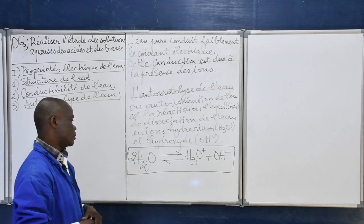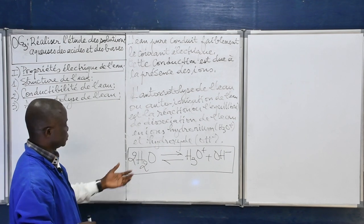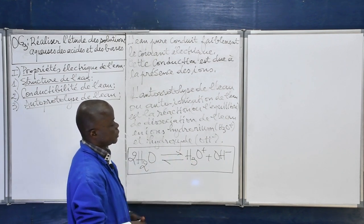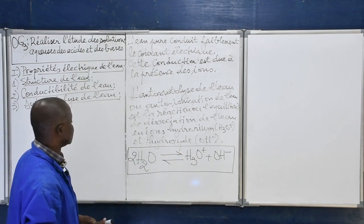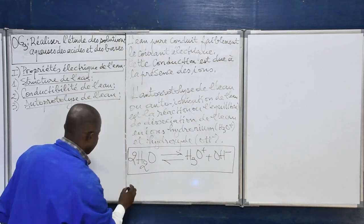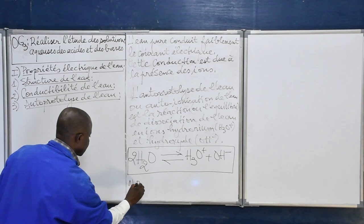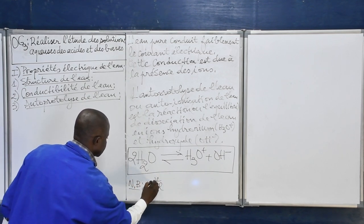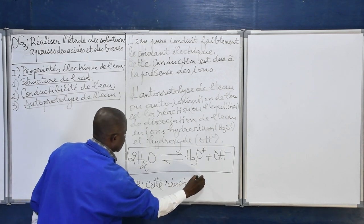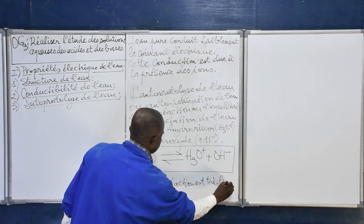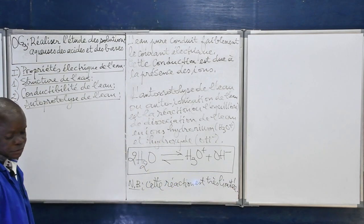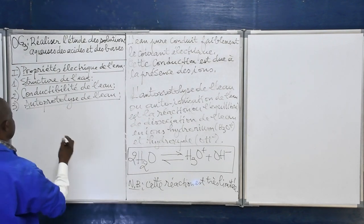La réaction d'auto-ionisation de l'eau : l'eau s'auto-ionise en donnant l'ion hydronium et l'ion hydroxyde. Cette réaction est très limitée. C'est un équilibre chimique.